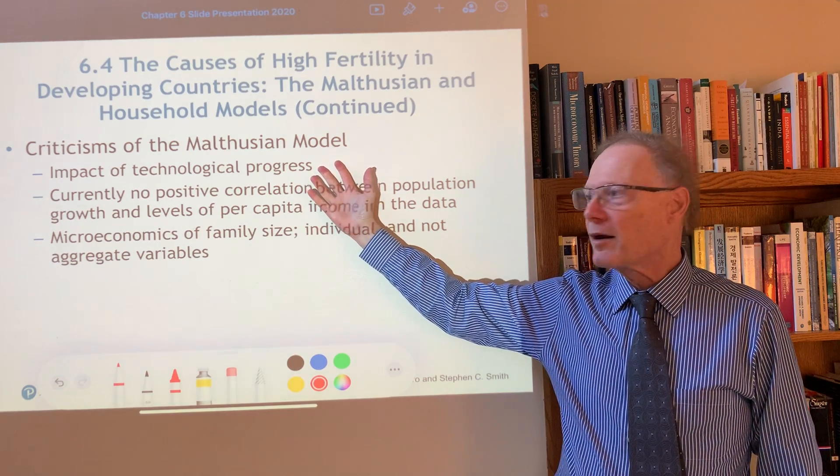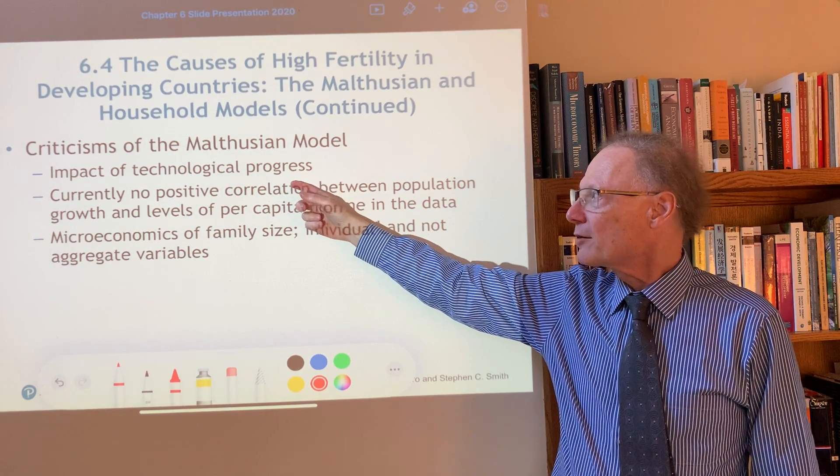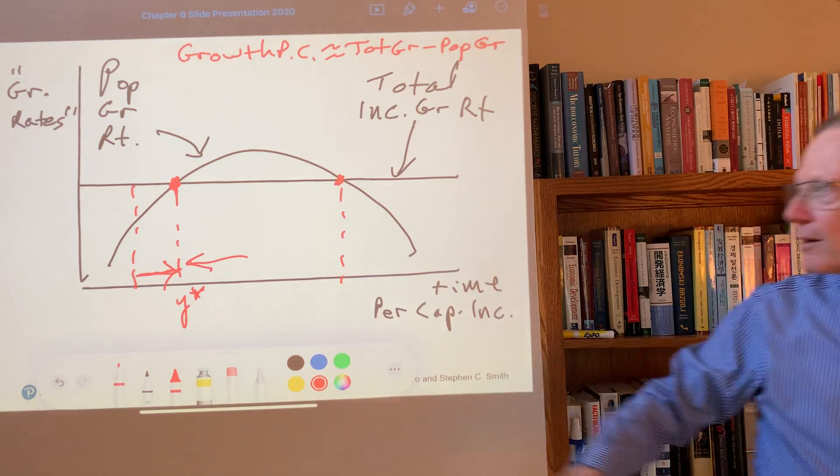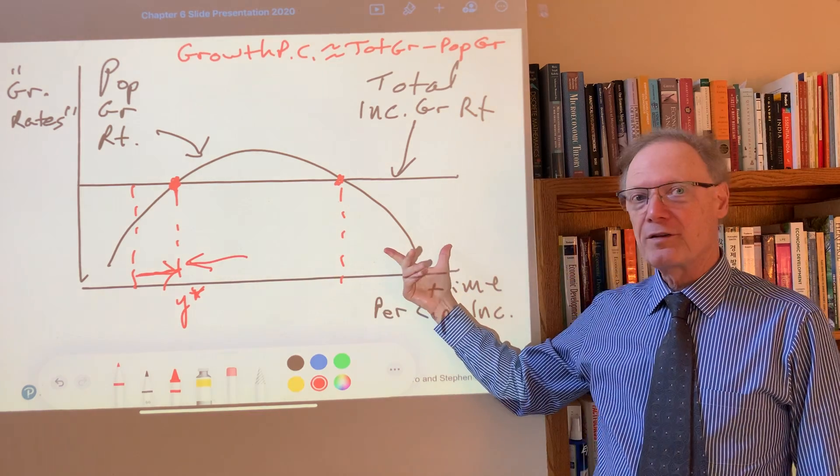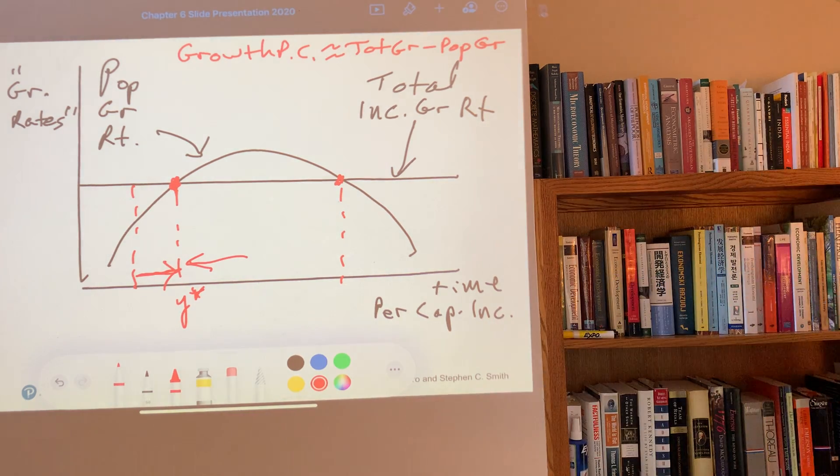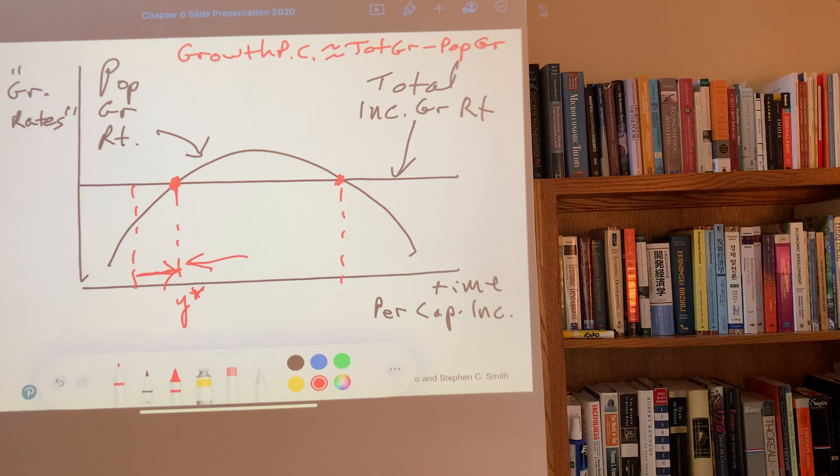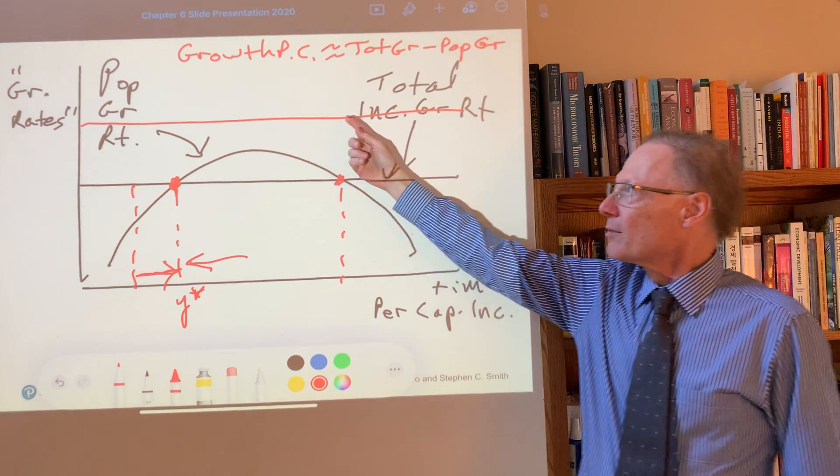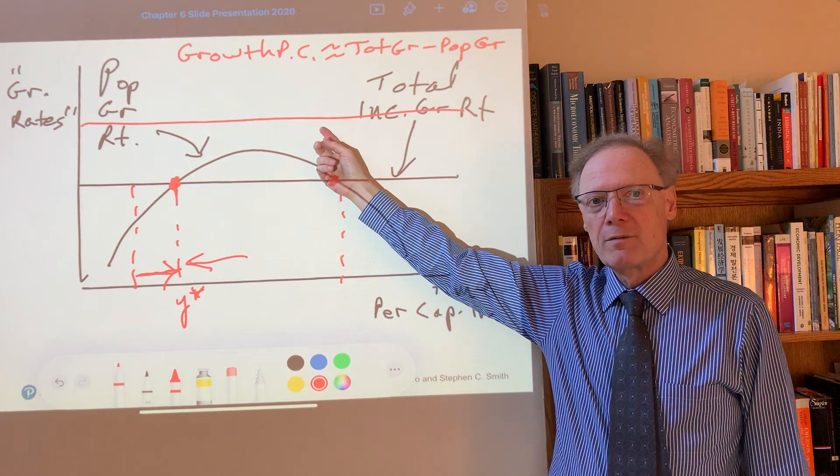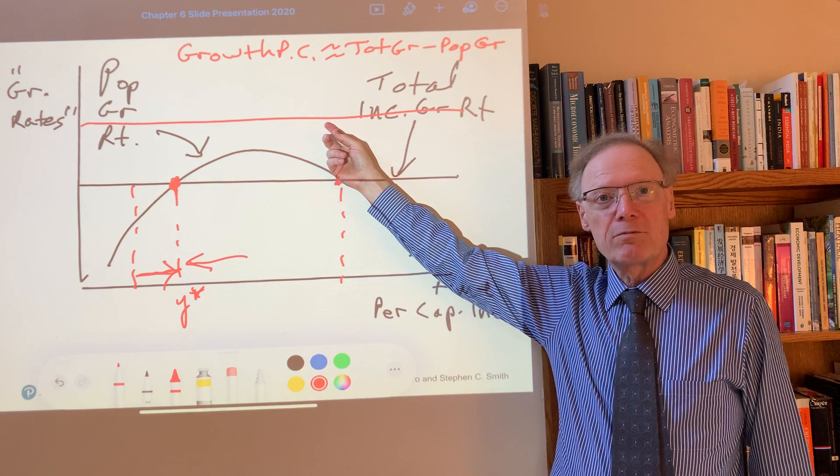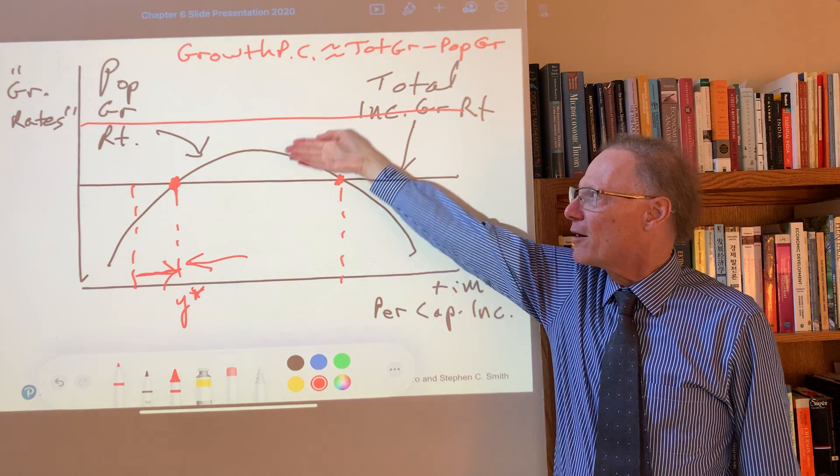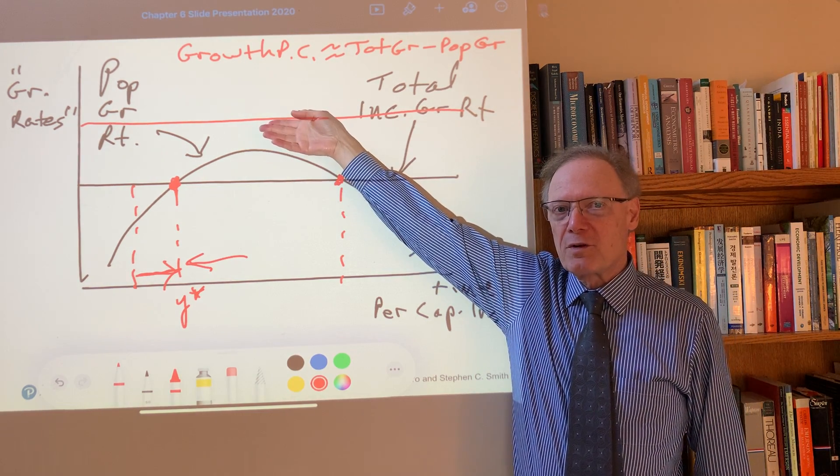There's a number of criticisms of this model. One is that the impact of technological progress has been very striking. One thing that it has done is to enable countries to get past this point. However, in addition to that, something important is that income growth rates have been able to be achieved at significantly higher levels than before, higher rates of growth than had previously been seen, to a point where one can escape the trap just through productivity.